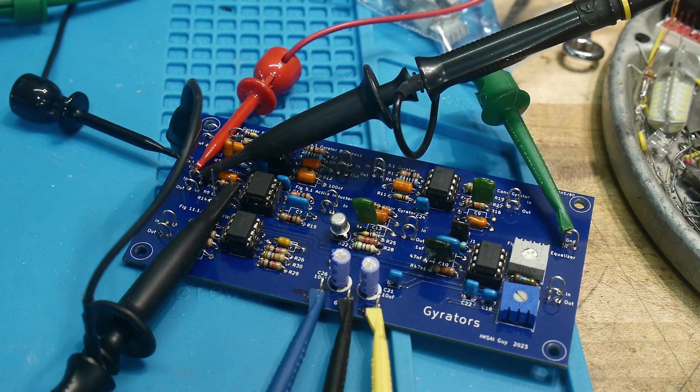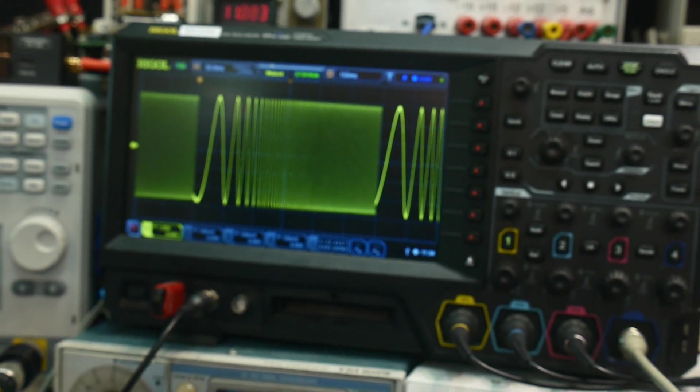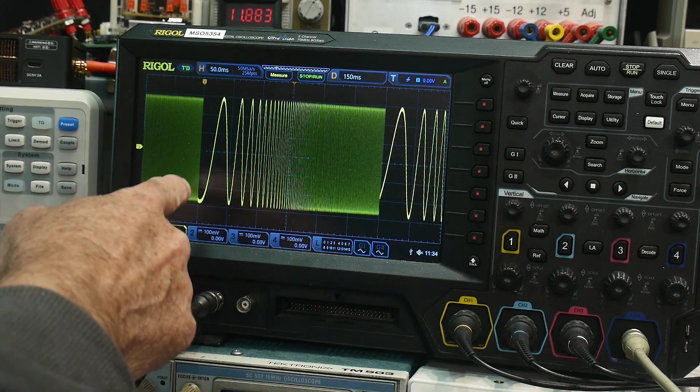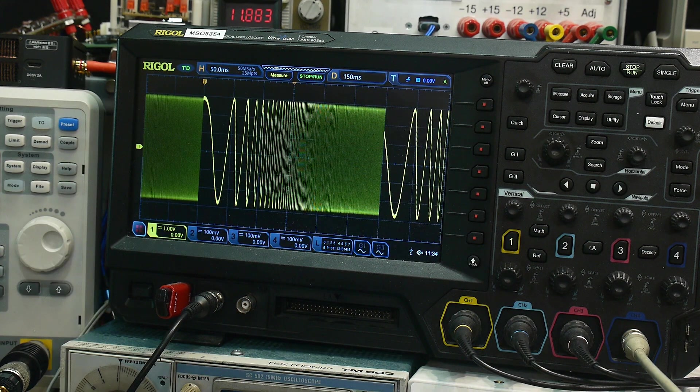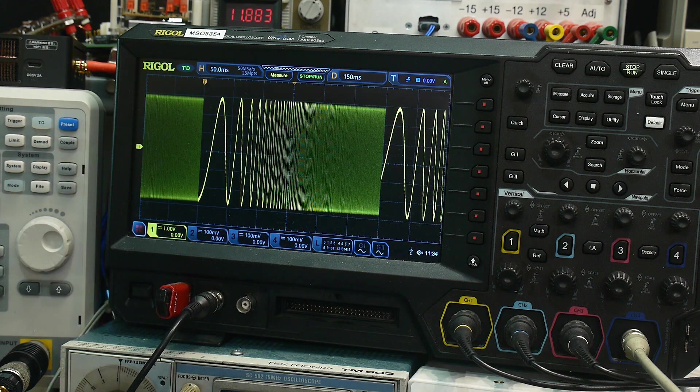Alright, here's our circuit here. And we will take a look at the scope. Now, this is the input, we're sweeping the input from 10 hertz to 10 kilohertz. And so it just gets smaller, smaller and smaller here.